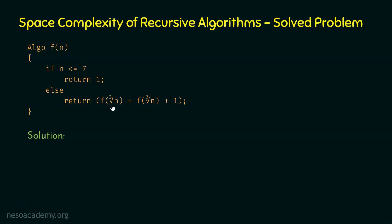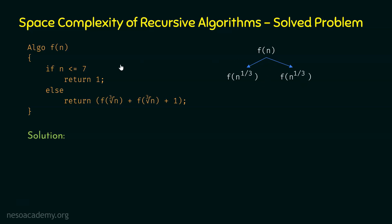From f of n, we are calling two functions: f of cube root of n and f of cube root of n. So one thing is clear — from f of n, two functions are called. f of n to the power 1 by 3 is the same as f of cube root of n. This is the initial tree obtained. Here I am assuming that n is neither less than 7 nor equal to 7, so the base case is not satisfied. From f of n, we are calling these two functions because the else block will be executed.